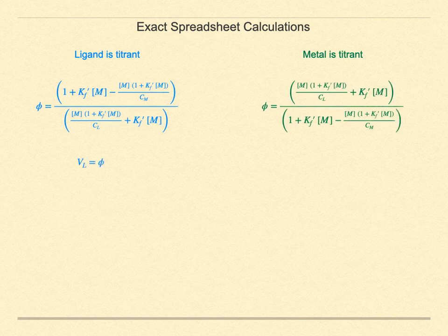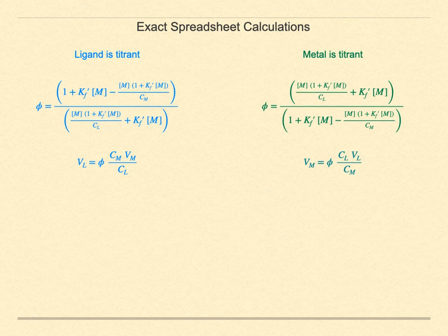And while we often titrate an analyte metal with an EDTA titrant, occasion also presents itself to titrate the EDTA with the metal ion. This is usually when we are trying to calibrate a new EDTA solution. We just turn this set of equations upside down to be able to treat that case.